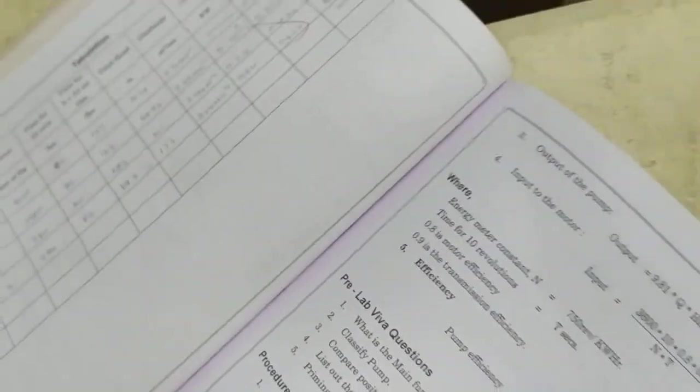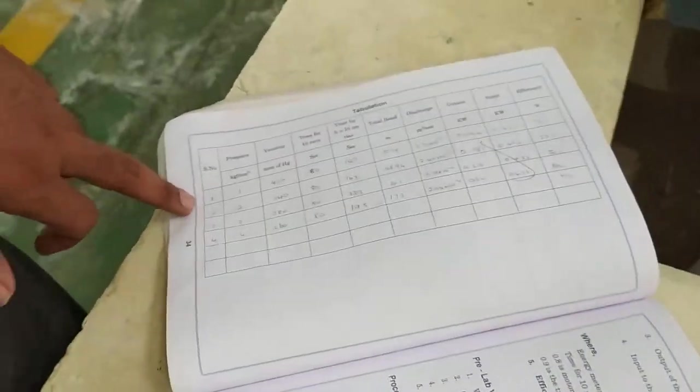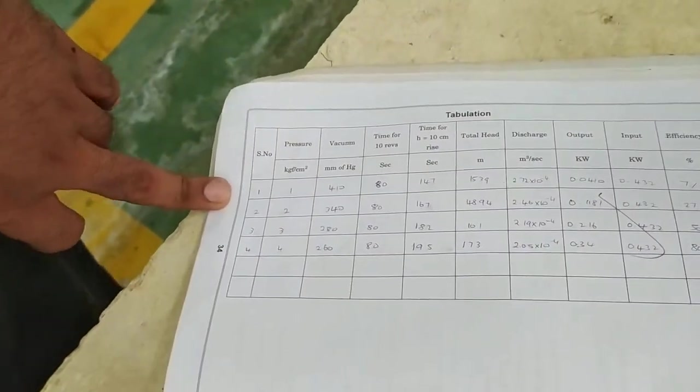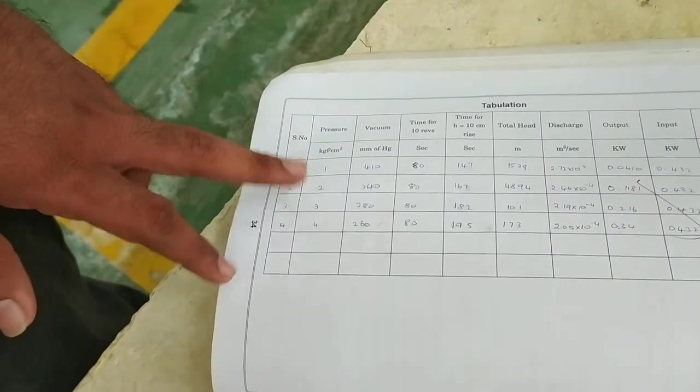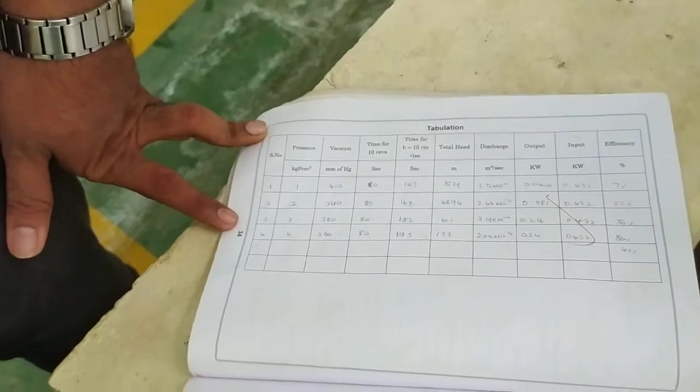Now we will take one set of reading, and by that reading, by adjusting the inlet pressure, we will go over the different sets of reading. Finally, that will help us to plot graph and find the average efficiency of the machine.